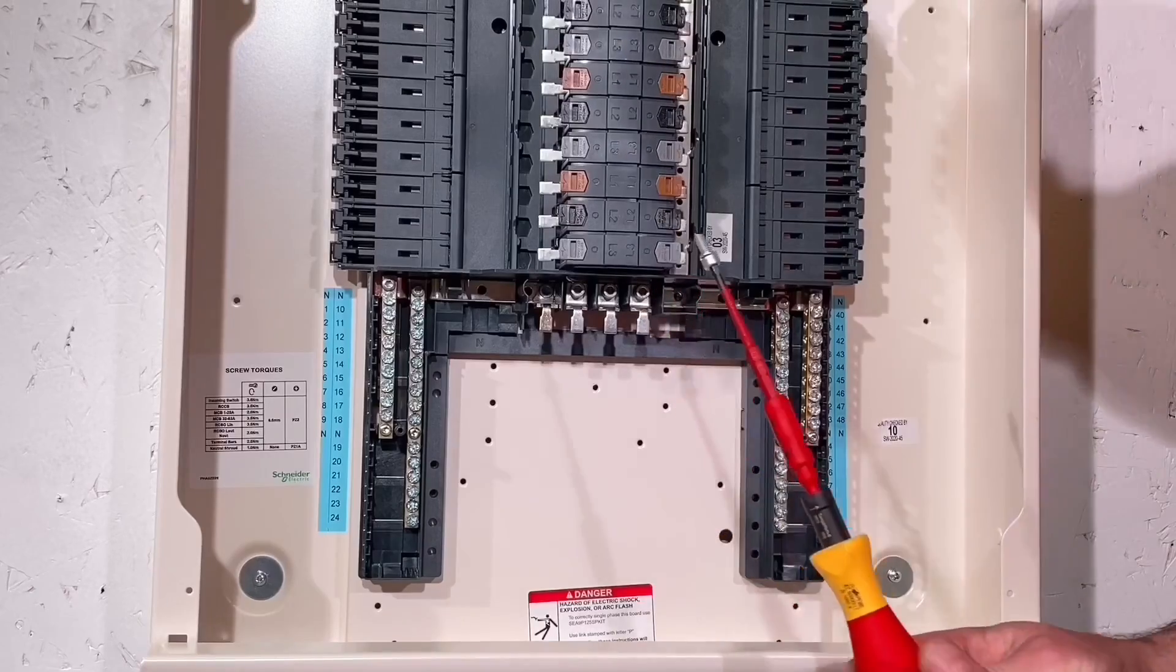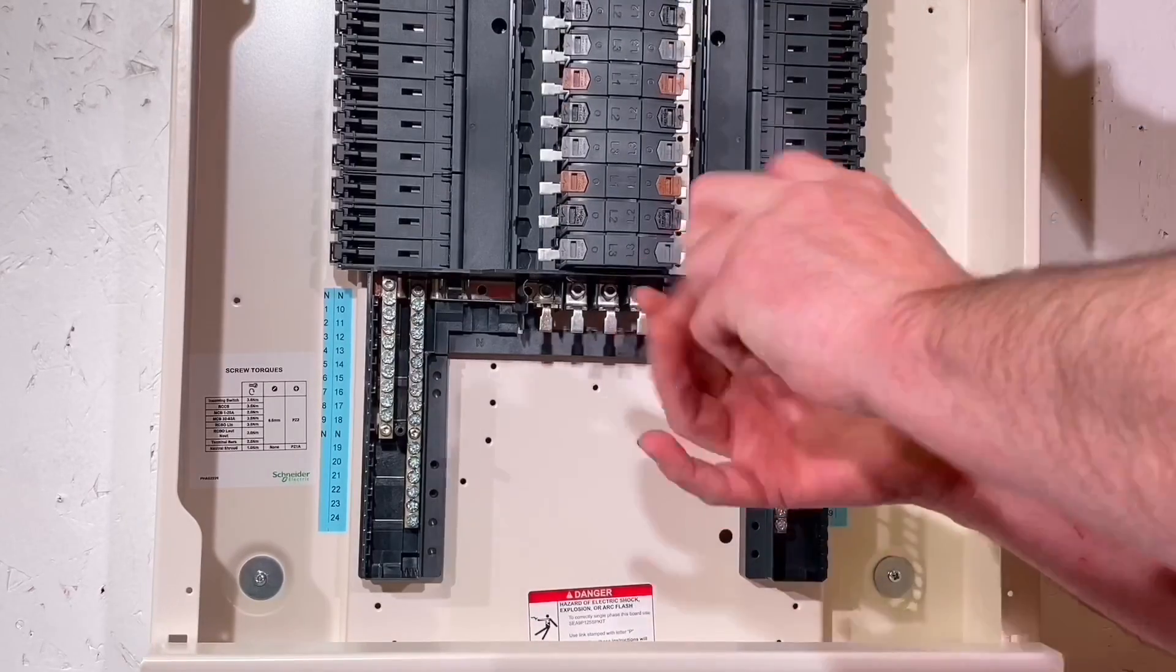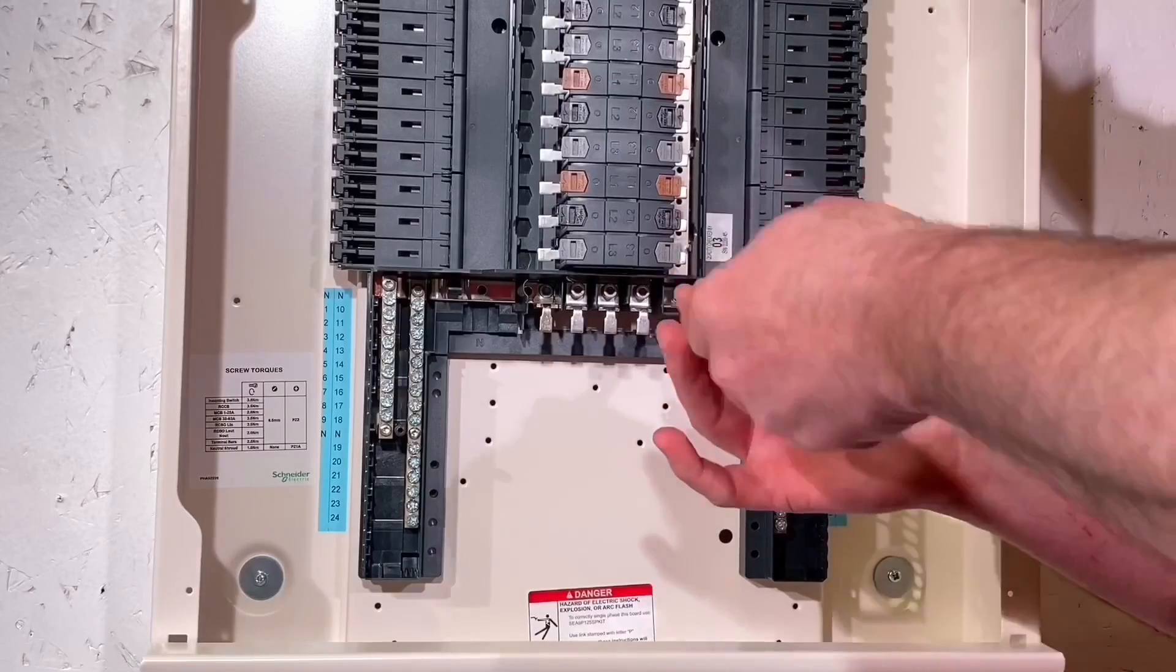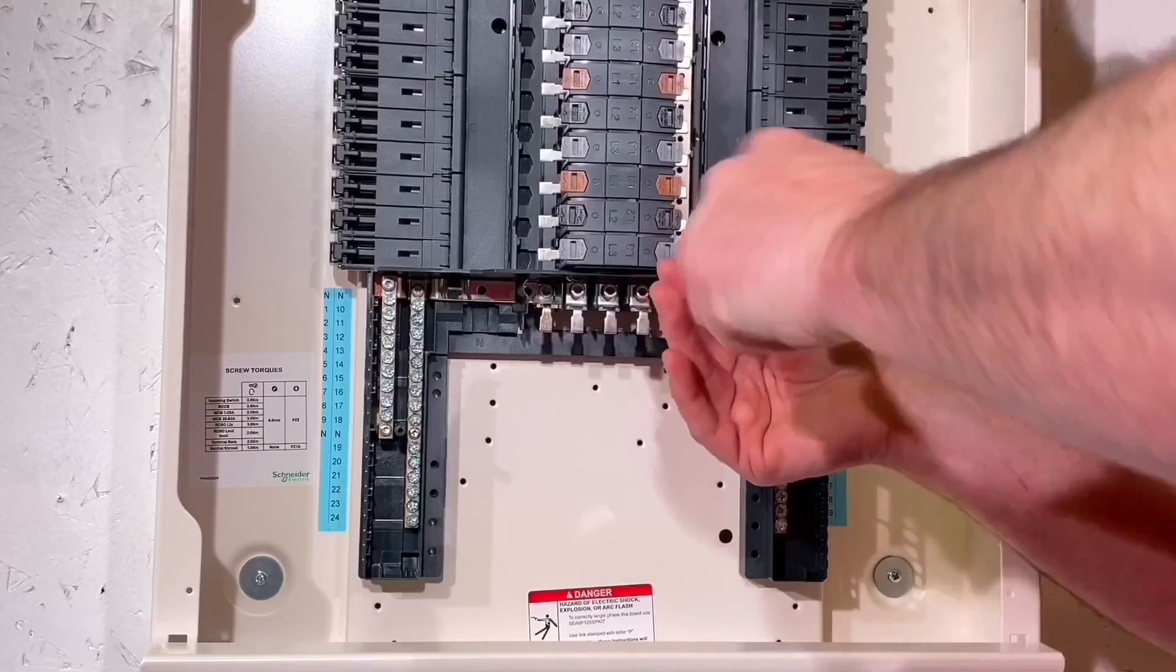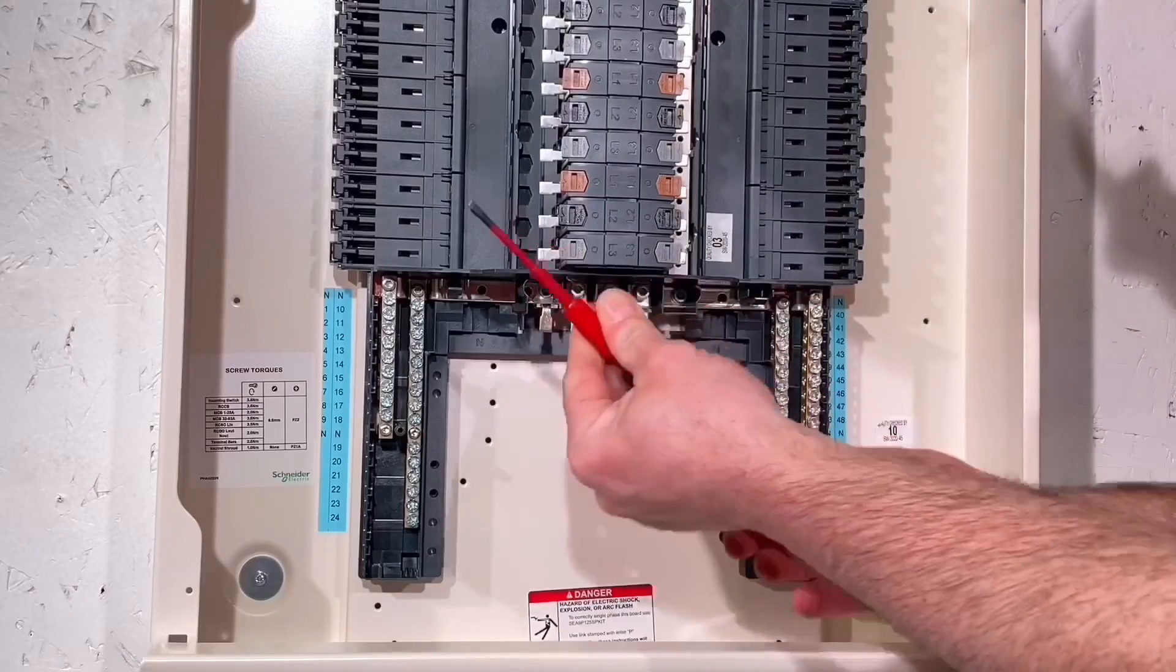We're going to bring in that Allen head screwdriver and obviously set that to the required torque, and the good thing is the torque settings are at the left hand side there on the board. Just put that into position and torque that one up. And that's the neutral bar then fitting Gordon. We can go about fitting the next stage, and obviously you'd repeat that for the other side as well.